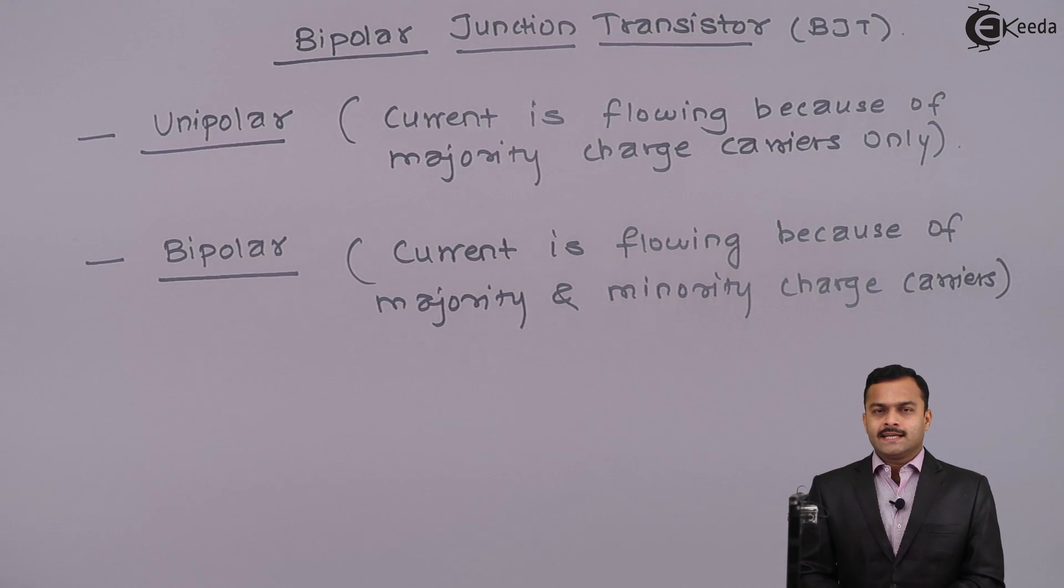How do you determine majority and minority charge carriers? It depends upon the extrinsic semiconductor, whether your impurity is pentavalent or trivalent. In case of pentavalent impurity, one electron is excess. Hence it is n-type and current is flowing because of electrons. So electrons are in majority whereas holes are in minority, but we still get current from both charge carriers.